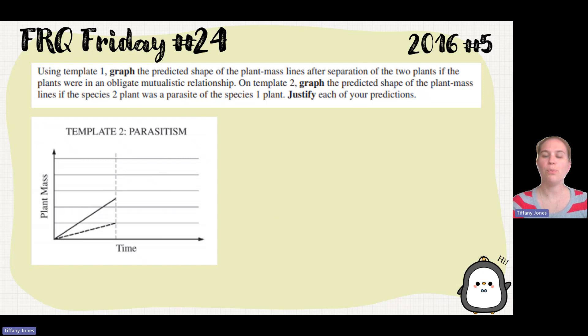So part two on the template, graph the predicted shape of the plant mass lines if the species 2 plant was a parasite of species 1 plant. Justify each of your predictions.